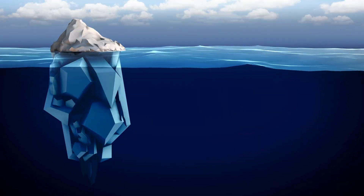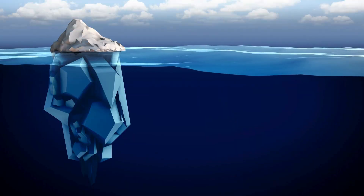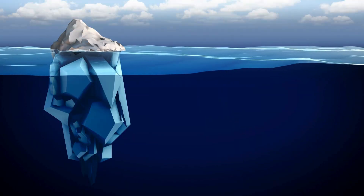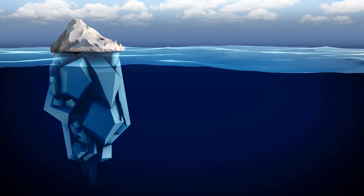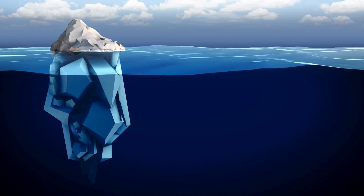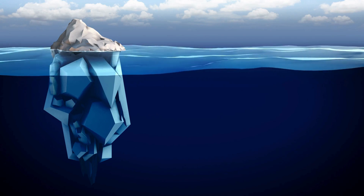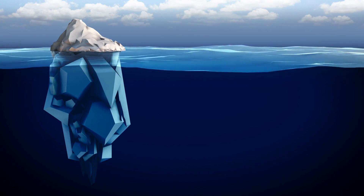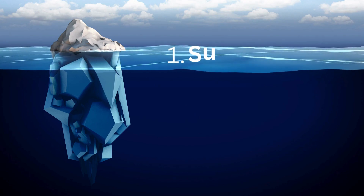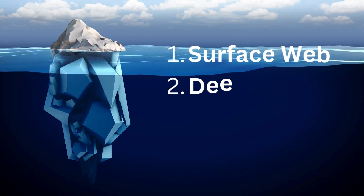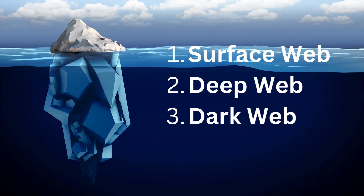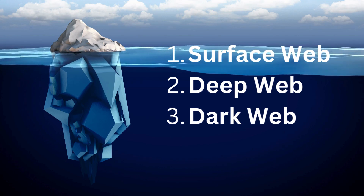The internet is like an iceberg. What we see on the surface is only a small fraction of what's really there. The internet consists of three different parts: one, the surface web; two, the deep web; and three, the dark web.